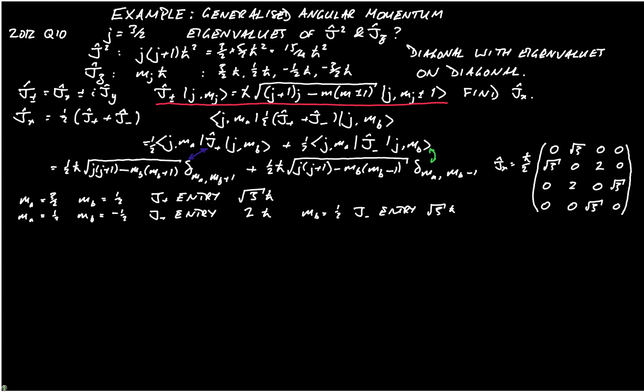So, now, the thing to remember is that across the top we have values of m b. So I'll put a little m b up the top. And down the left-hand side we have values of m a. So I'll put a little m a on the left-hand side there.